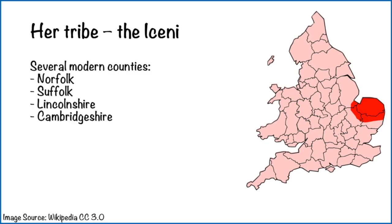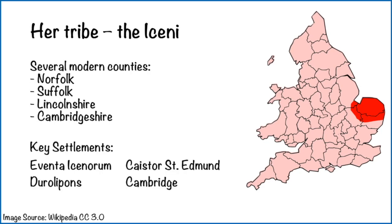The Iceni territory covered several modern counties: Norfolk, Suffolk, Lincolnshire and Cambridgeshire — not all of them, but some of them. There were also a couple of key settlements. Venta Icenorum — that's Caistor St Edmund — and Durolipons, which is modern-day Cambridge. I wonder if you live anywhere near either of those.